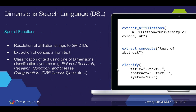Another special function is extract concepts. In this case, we use our internal machine learning models to return keywords from any text you pass to the function. These keywords are not simply noun phrases or nouns from the text, but normalized keywords based on internal statistical analysis of all the information Dimensions knows about. Similarly, we have a classify function that from a title and abstract returns a specific taxonomy entry. You can specify what taxonomy to use — Dimensions knows about a handful of taxonomies including general ones like field of research codes and more specific ones like ICRP cancer types or disease categorization.